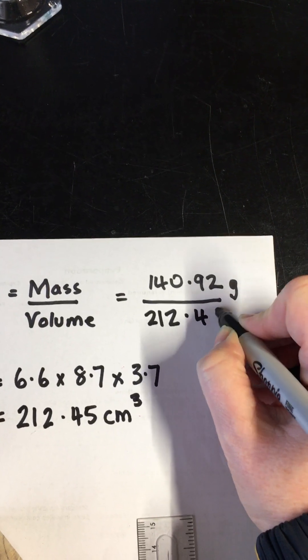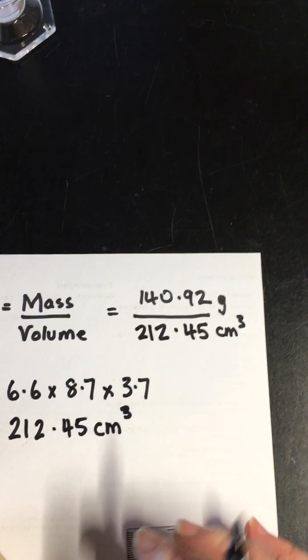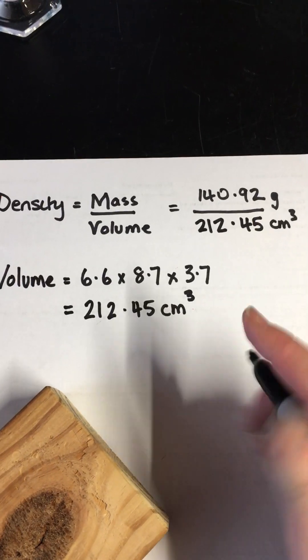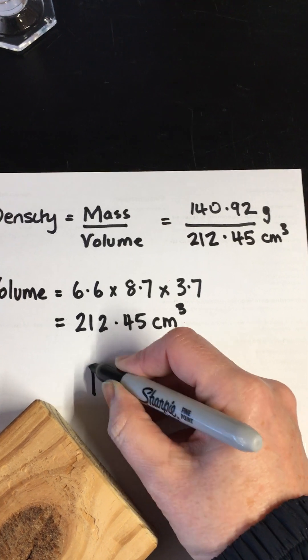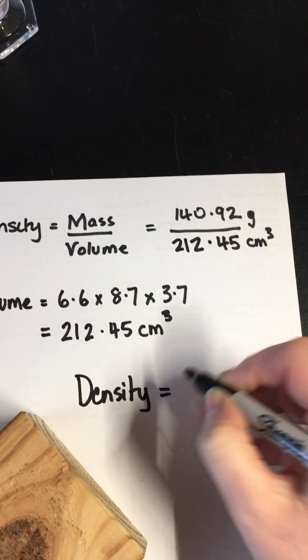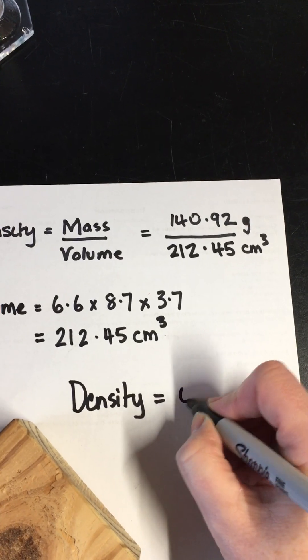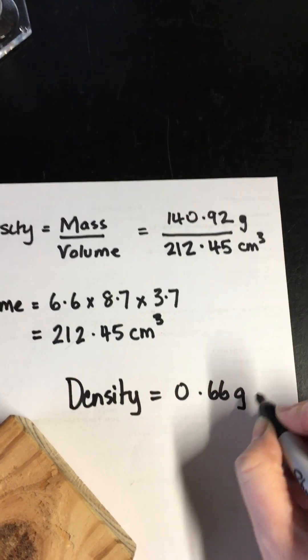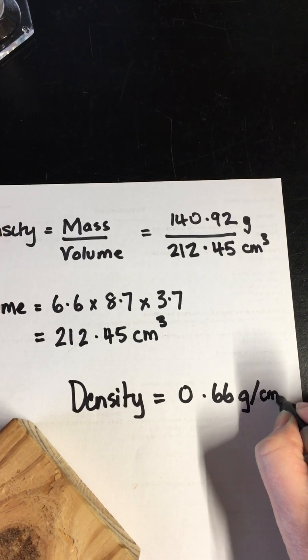212.45 centimeters cubed, and we end up with a density for this block of 0.66 grams per centimeter cubed.